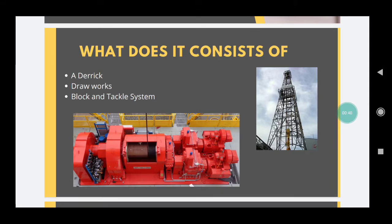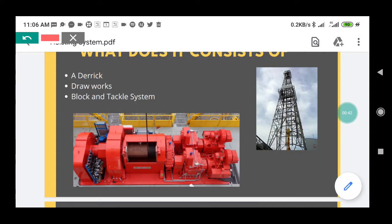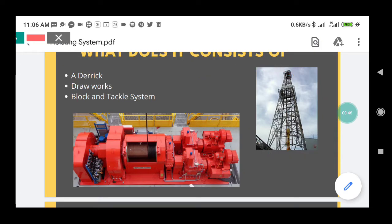Here in this picture, this structure is known as a derrick. A derrick is a structure of an oil well that allows the drilling machinery to be raised and lowered.